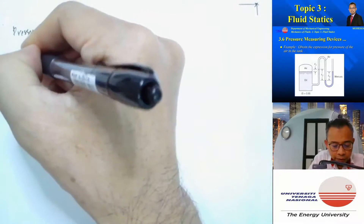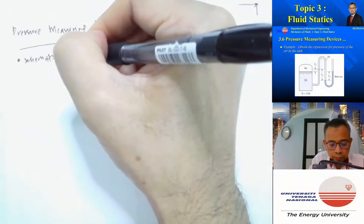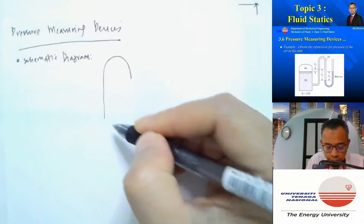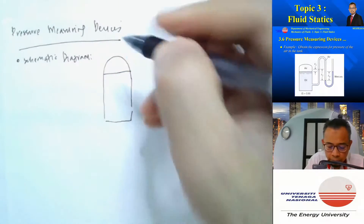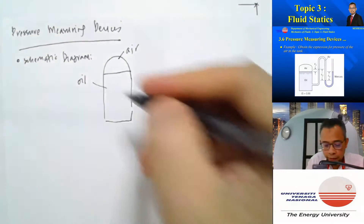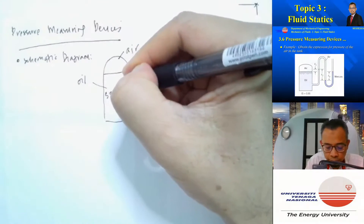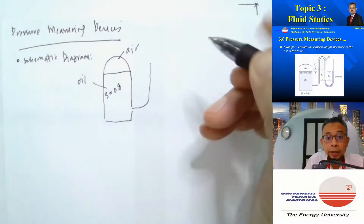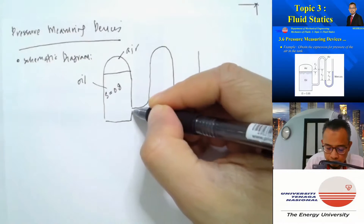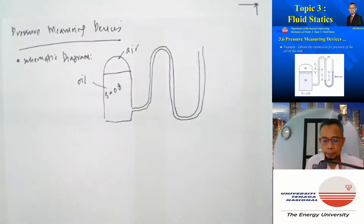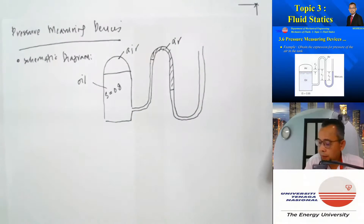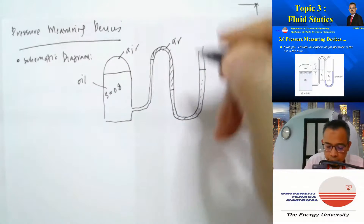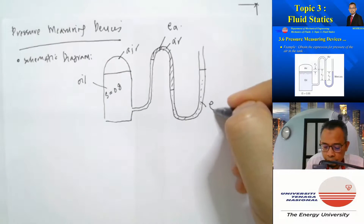Let's draw a schematic diagram of this system. We have a container whereby at the top there is air, and at the bottom we have oil where the specific gravity is equal to 0.8. Then we have a manometer system. The oil goes up to a certain point, and from there we have air again, followed by mercury — calling the density of air rho_a and mercury rho_m.